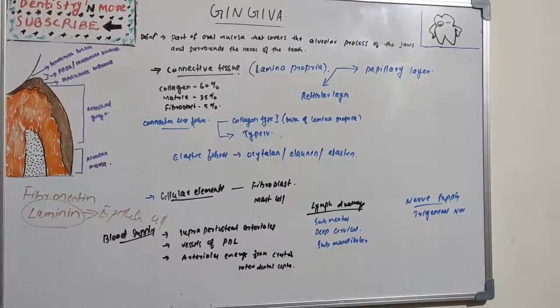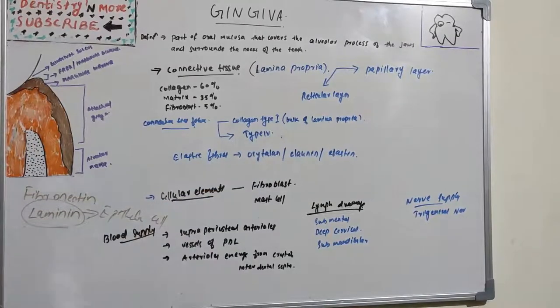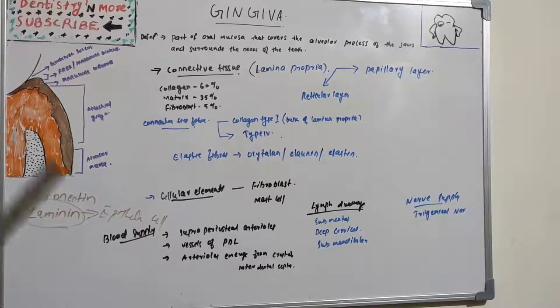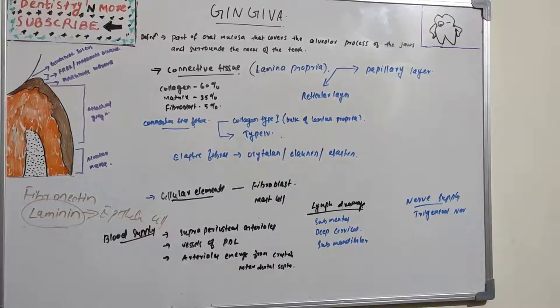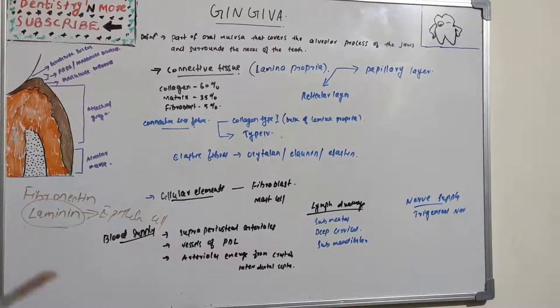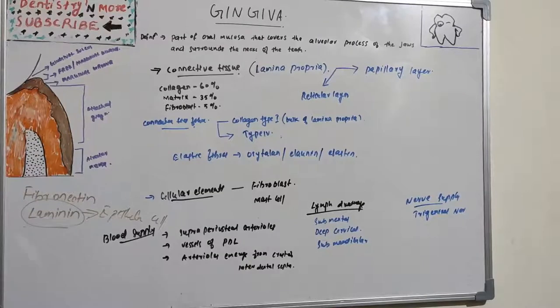And type 4 collagen, which branches between the collagen type 1 bundles and is continuous with fibers of the basement membrane. So we have type 1 and type 4. Type 1 forms the bulk of the lamina propria, whereas type 4 branches between the type 1 and is continuous with fibers of basement membrane and other blood vessels. The elastic fiber system is composed of oxytalan, elaunin, and elastin.